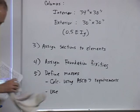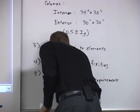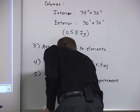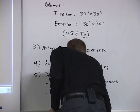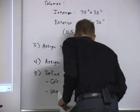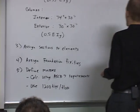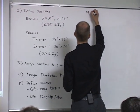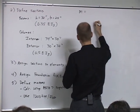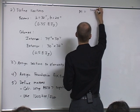Okay, so at this point we want to move along and define the masses. We've finished the elements, finished the fixities, defined the masses, and we wrote out here a little bit that we're going to use ASCE 7, and for interest of time we're going to use 1200 kips per floor.